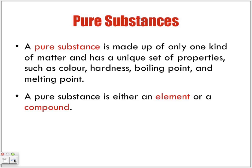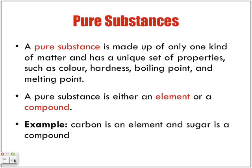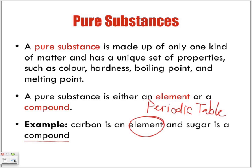A pure substance is either an element or a compound. Carbon is an element. Elements are found on the periodic table — every symbol on the periodic table is considered an element. When we put a whole bunch of them together, we form something called a compound. Sugar is considered a compound, and it is made up of three elements.